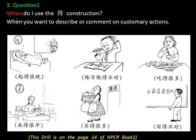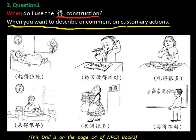第一个问题：when do I use the 得 construction？什么时候用这个 construction 呢？就是说当我们想 describe or comment on the action。好，我们来看一下练习题。第一个：起得很晚，get up very late。第二个：做得不对。第三个：吃得很多。第四个：来得很早，come very early。